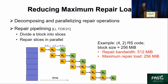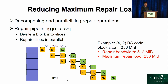To reduce repair load, one approach is to decompose and parallelize repair operations across all available nodes. One state-of-the-art approach is repair pipelining: the idea is to divide the block into slices and repair the slices in parallel. For example, N1 sends partial linear combinations for the first slice to N2, which reconstructs the slice and sends the result to N0. While N2 sends the result to N0, N1 starts repairing the second slice. These transmissions occur in parallel, balancing the load — the maximum repair load is 256 MB — though the repair bandwidth remains 512 MB since we still collect k blocks.